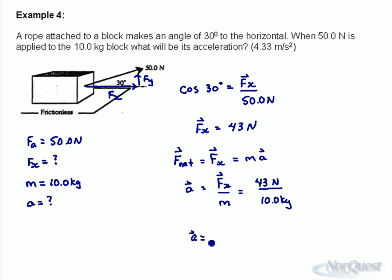And your acceleration in this example, divide by 10 should give you 4.33, 4.3 newtons per kilogram or meters per second squared. I notice my answer isn't to the right significant digits. My angle's to only two sig digs. My answer should be only two sig digs.